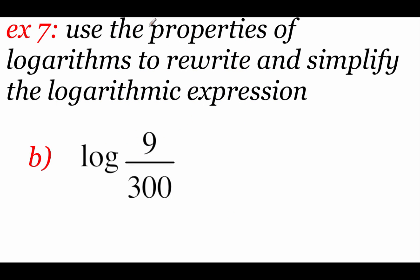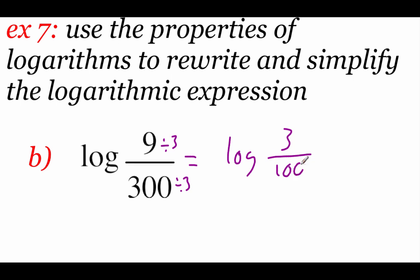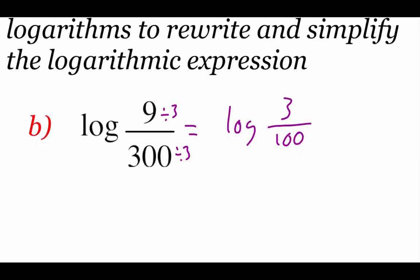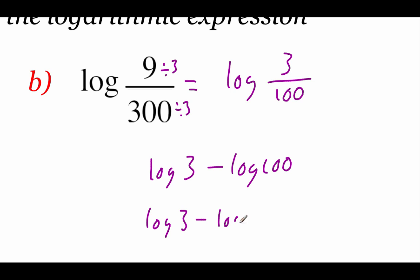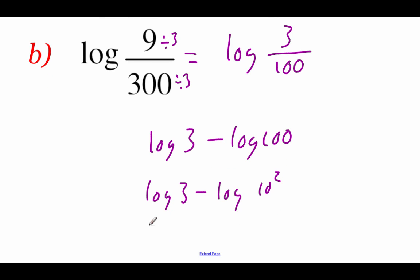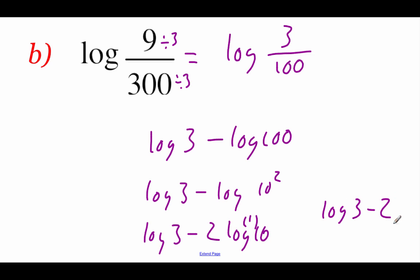Last example: log of 9 over 300. First, we can reduce — both are divisible by 3, giving log of 3 over 100. Splitting with the quotient property gives log of 3 minus log of 100. This is a base 10 logarithm, so rewriting 100 as 10 squared and bringing the power down gives log of 3 minus 2 log of 10. Since log of 10 equals 1, we get log of 3 minus 2 as our final answer.